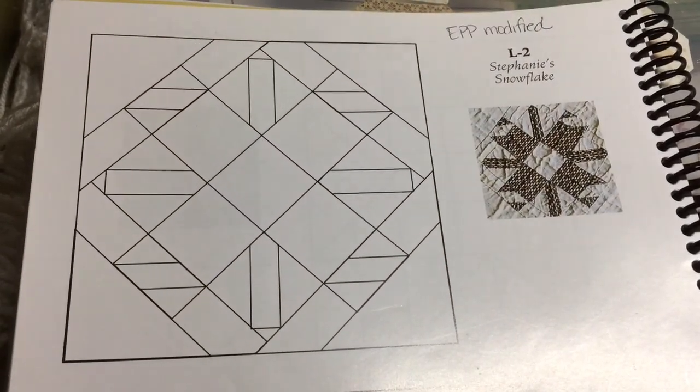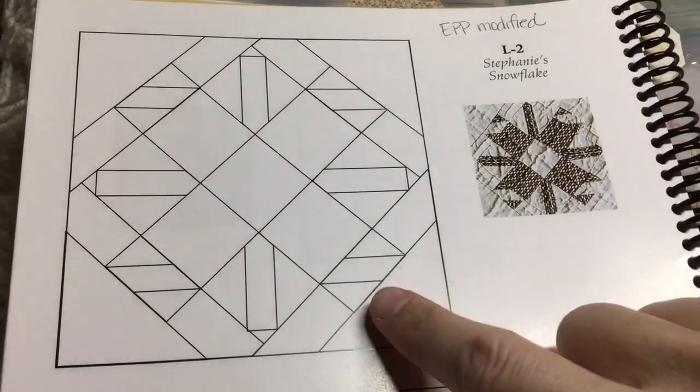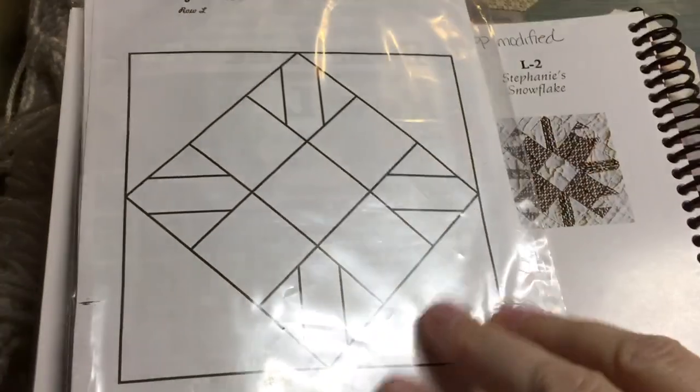Next block is L2. L2 has been modified and simplified to eliminate these little rectangle pieces so that it's easier to English paper piece.